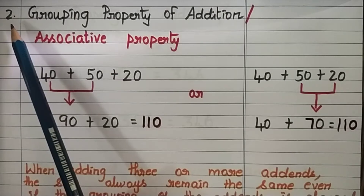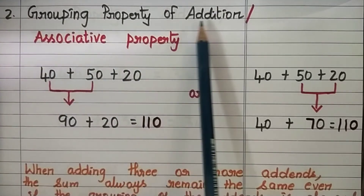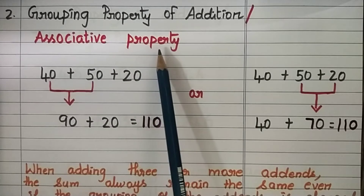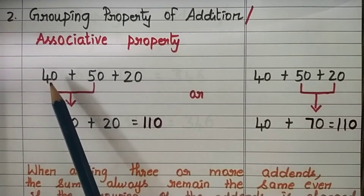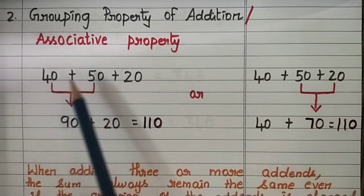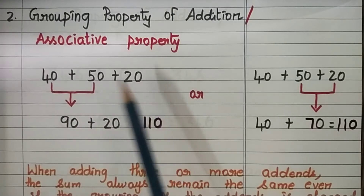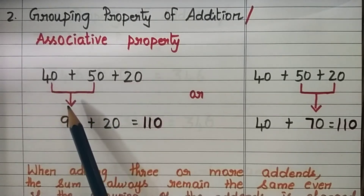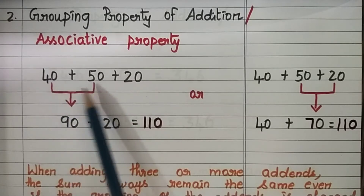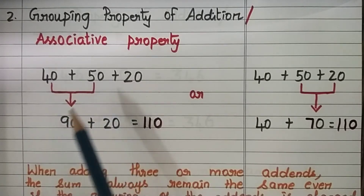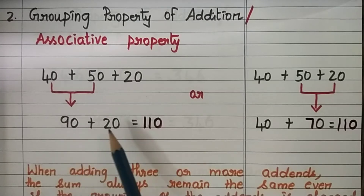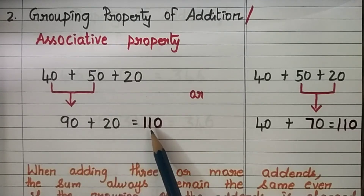Let us see the second property: grouping property of addition, or you can call it the associative property. Let us take three numbers: 40, 50, and 20. We have three addends here. First, we will add the first two addends: 40 plus 50, we get the sum 90. Now add 90 plus 20, and we get the final answer 110.